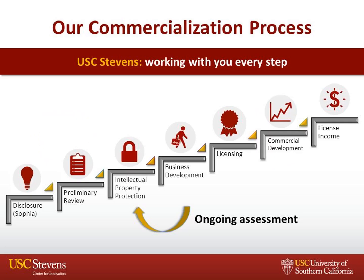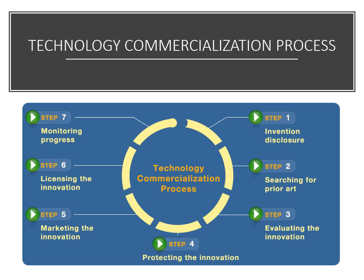The USC Stevens commercialization process consists of stages: first, disclosure; second, preliminary review; third, intellectual property protection; fourth, business development; fifth, licensing; sixth, commercial development; and seventh, license income. These represent the technology commercialization process.